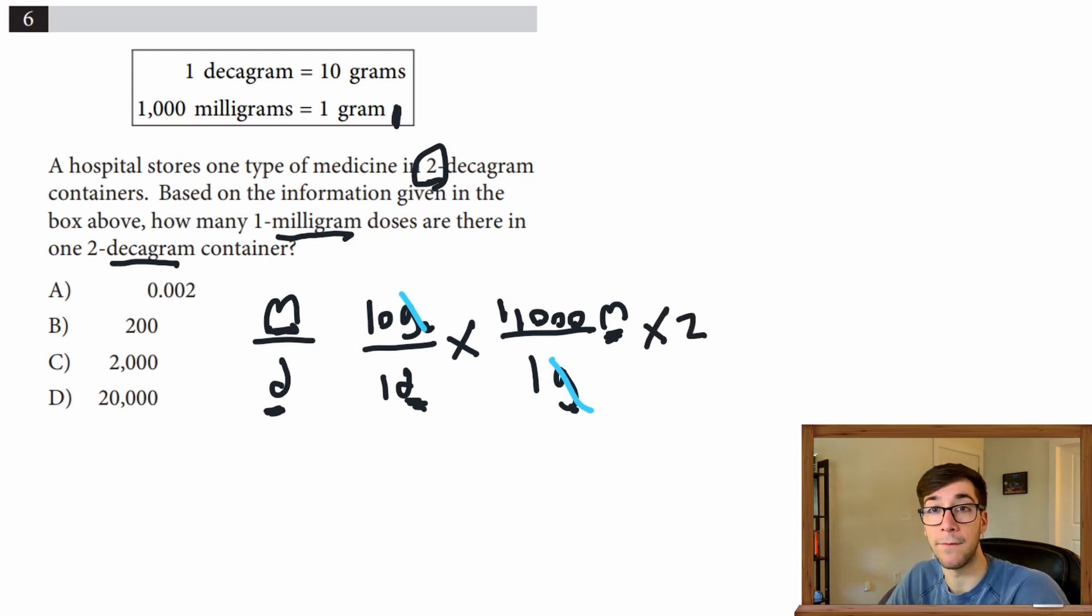Now that we got all our ratios in place, we just have to multiply and solve. 10 times 1,000 times 2 is 20,000, and our answer is D.